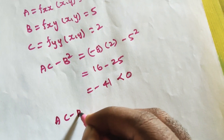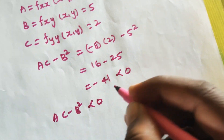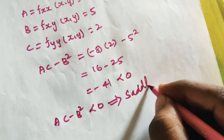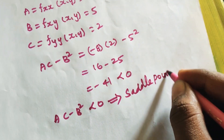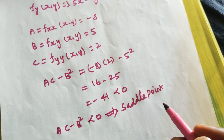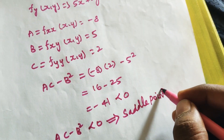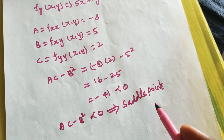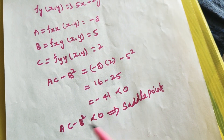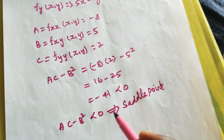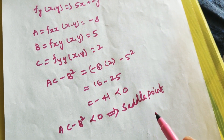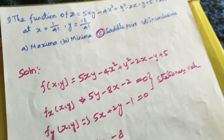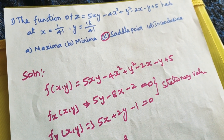ac - b² = -41, which is less than 0. If ac - b² is less than 0, then this function should be a saddle point. As explained in the conditions in the last video, the answer is saddle point. So the answer will be C, that is saddle point. Ok friends, thank you.